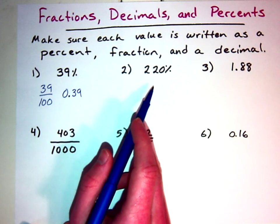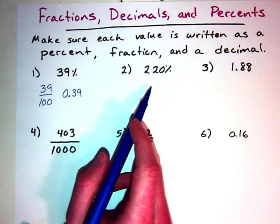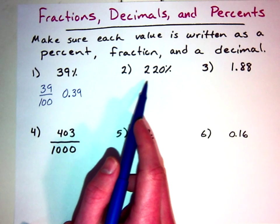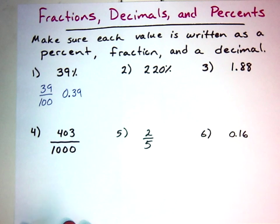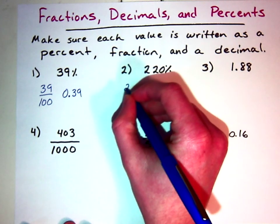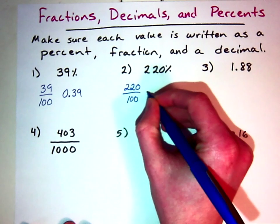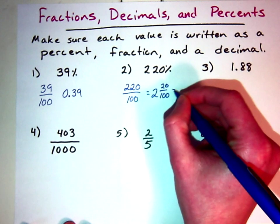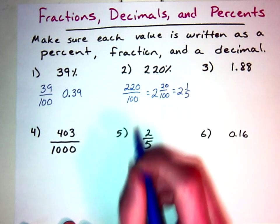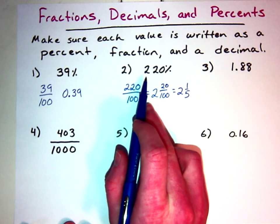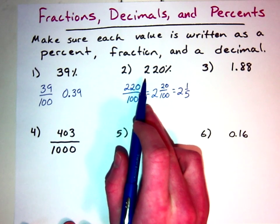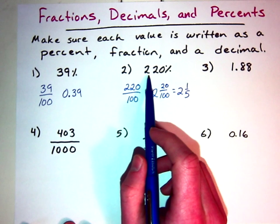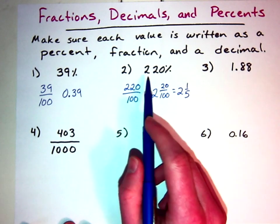For number two, I have two hundred twenty percent. A percent is usually out of a hundred, but this one is greater than a hundred. For every hundred percent, that's going to be a whole number. So two hundred percent gives a whole number of two. You could write it as 220 over 100, which simplifies to two whole and twenty over one hundred, and that simplifies to be two and one-fifth. If you had five hundred twenty percent, it would be five and one-fifth. For every hundred percent, it's going to be a whole number.